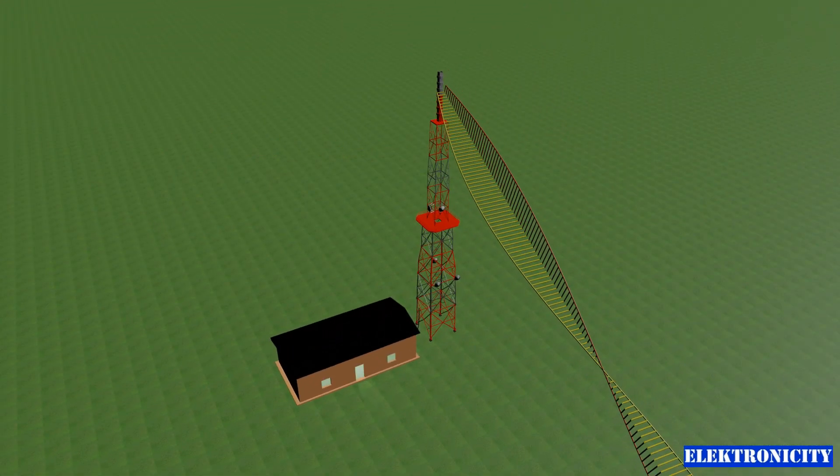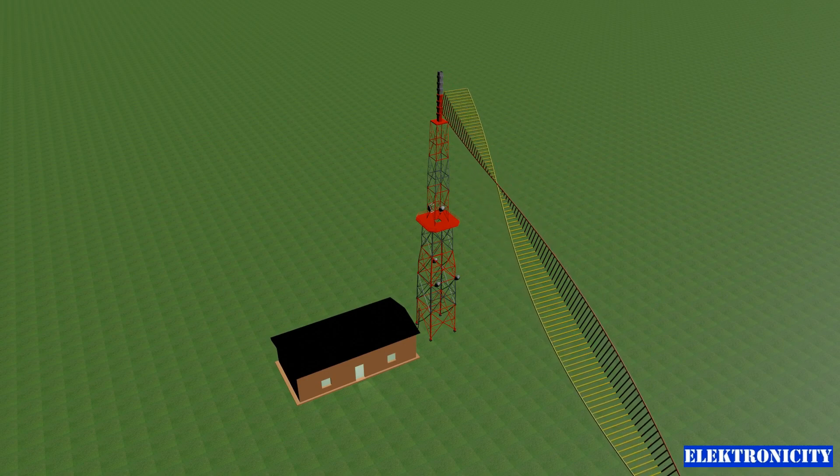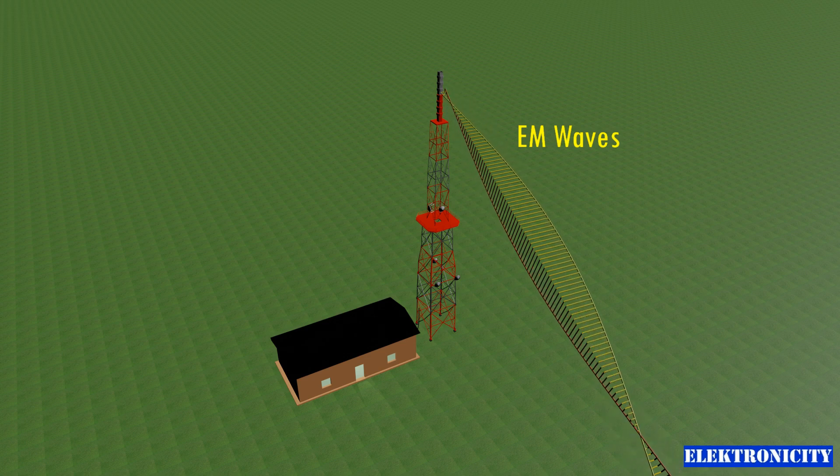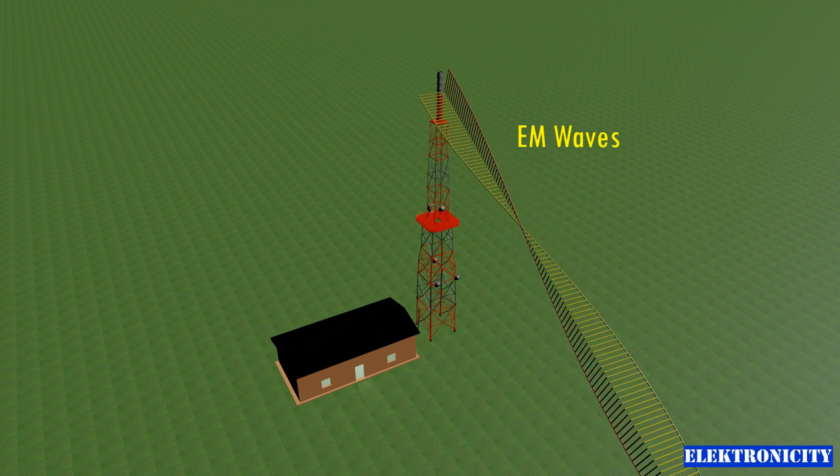Here the electrical signals are modulated onto a carrier frequency and then radiated as electromagnetic waves that travel through air at the speed of light.